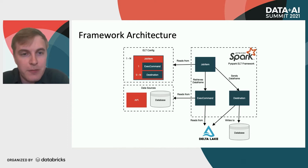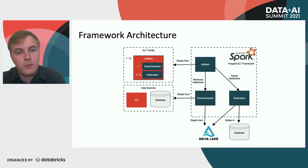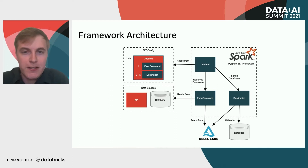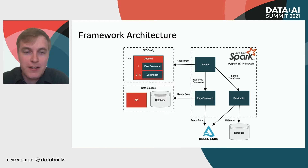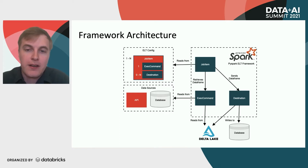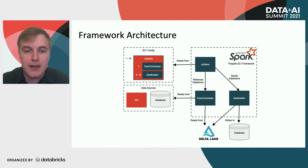Let's take a look at our basic architecture diagram. In the upper left of the diagram, you can see the ELT config box — this is our JSON configuration file. It consists of one to many job items. A job item is basically a package of work for the framework to ingest, understand, and execute. Within a job item there is a single exec command that executes some command, and then lastly there's a list of destinations that are optional. When the framework reads in this ELT config file, the job item reads in the config and sends it to the exec command. That exec command usually reads data from some source — a relational database, a web API, or even our Delta Lake.